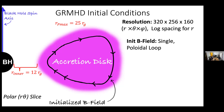Another reason to use fluid models is they're easier and capture the global simulation. There's a recent paper doing GRPIC where they made images from a global PIC simulation, but it only ran for about 40 R_G over c — a few minutes. If you want a long time simulation, it's just easier to use MHD. There are caveats to this approach that I'll discuss towards the end.